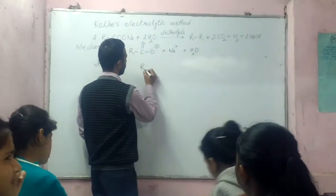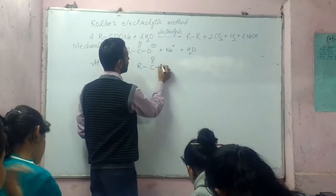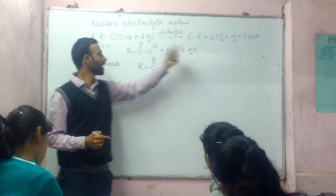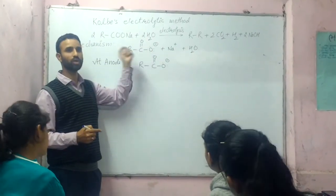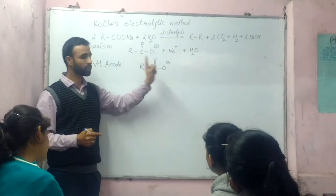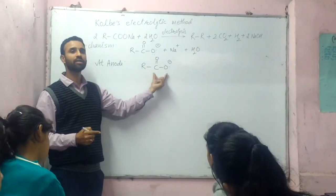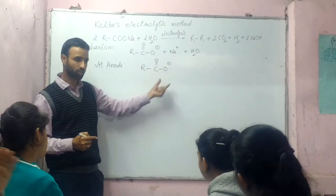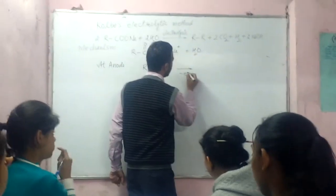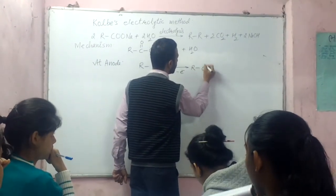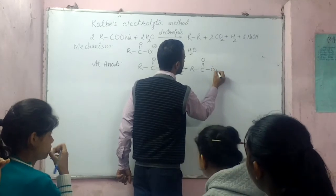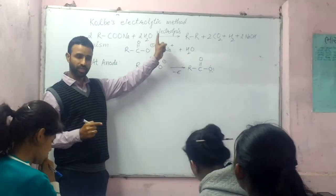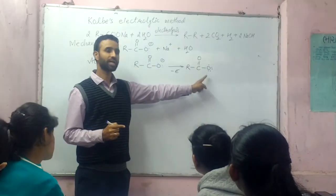At anode, oxidation takes place. There is a competition between water and the carboxylate anion as to which will lose its electron. This anion loses the electron. When it loses one electron, we get a free radical. Since this is an electrolysis reaction, we get a free radical.